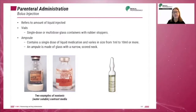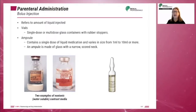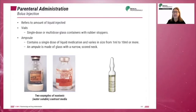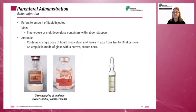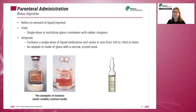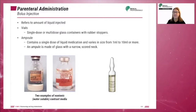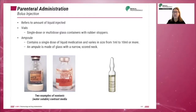Bolus refers to the amount of liquid injected. There are two main supplies: vials and ampoules. A vial is a single-dose or multi-dose glass container with a rubber stopper. Ampoules contain a single dose of liquid medication and vary in size from 1 mL to 10 mL or more. Ampoules are made of glass with a narrow scored neck. Use a 2x2 cotton gauze when opening the ampoule. Break it open to draw up the medication, then remove any air from the syringe. Be sure to show the physician the ampoule and syringe while stating out loud what has been drawn up.